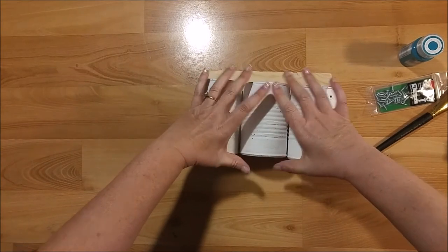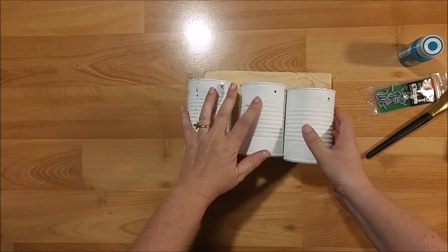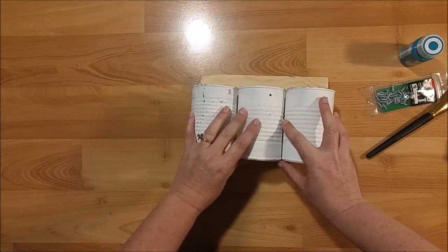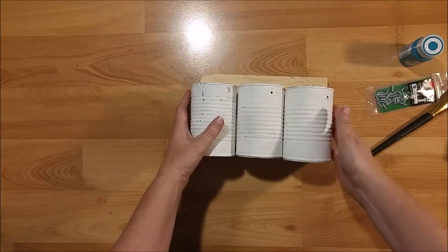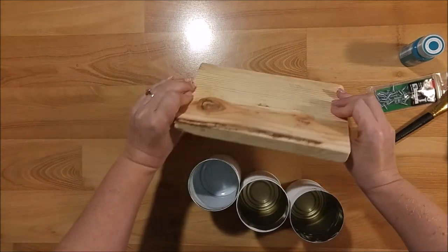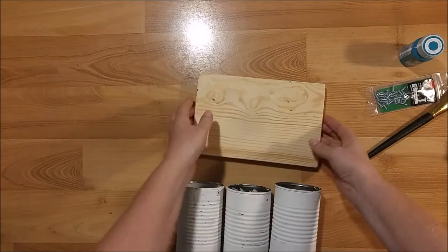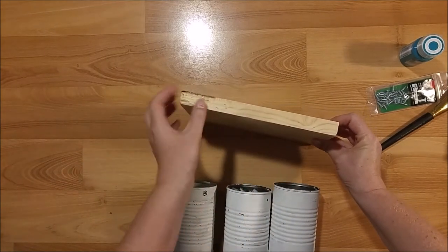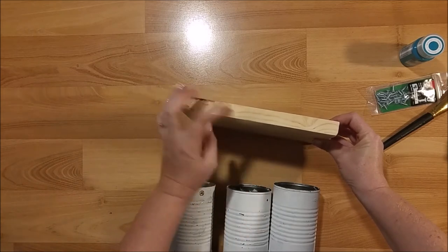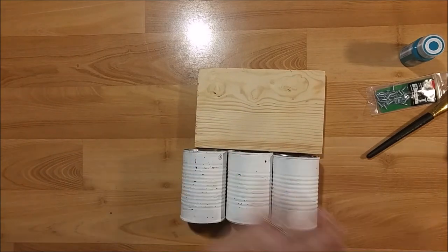We made snowmen out of them so they were already painted white. I just took my wood and put them together on the wood and had my husband cut the piece off. It was a piece we had in our garage, and it's about three-quarters, maybe five-eighths inch thick. So you'll need six cans.